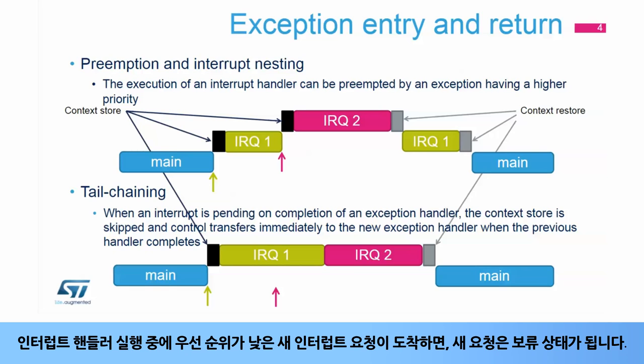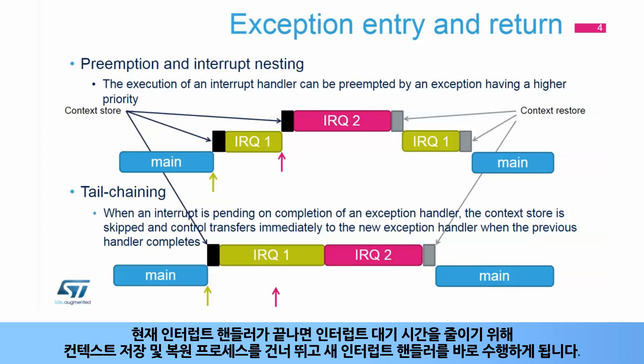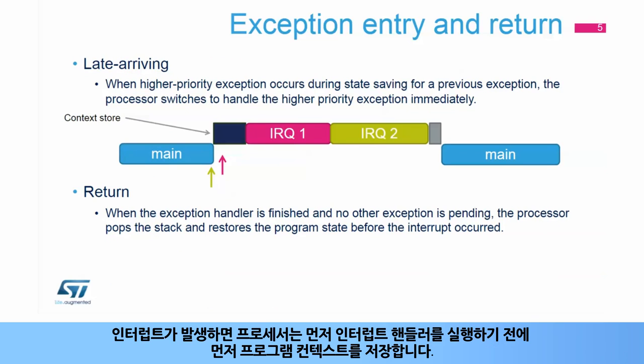When there is an interrupt request with low priority raised during execution of an interrupt handler, it becomes pending. Once the current interrupt handler is finished, the context saving and restoring process is skipped, and control is transferred directly to the new exception handler to decrease interrupt latency.